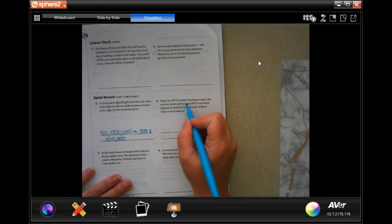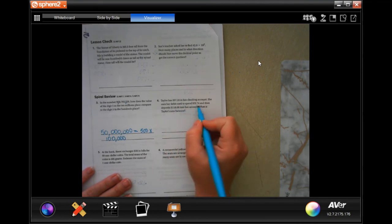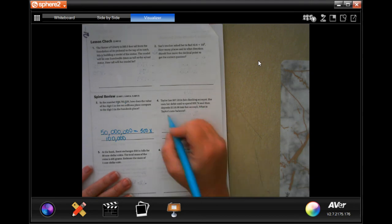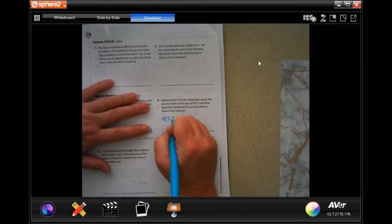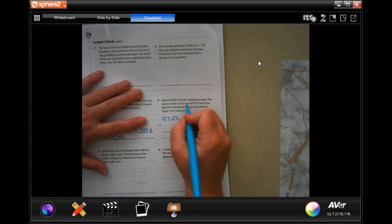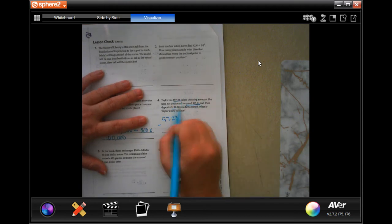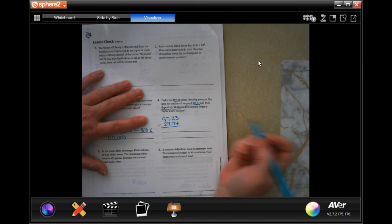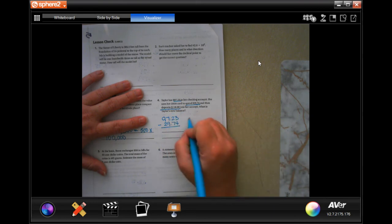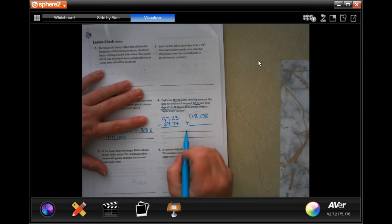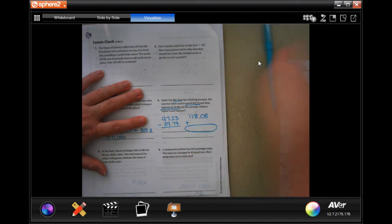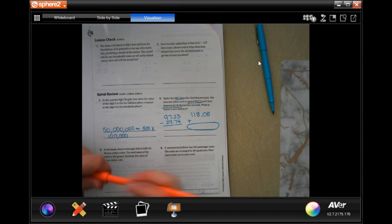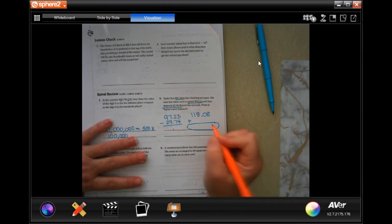Keller has $97.23 in her checking account. She uses her debit card to spend $29.74 and then deposits $118 into her account. What is her new balance? So, she starts with $97.23. She subtracted because she spent $29.74, so we're going to subtract that. But then, we're going to add on $118.08 because she deposited it and then we'll have our answer. So, let's get started. First, I'm adding subtracting decimals, so I'm going to go ahead and drop my decimals.